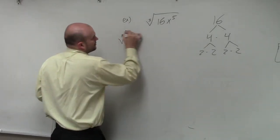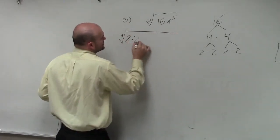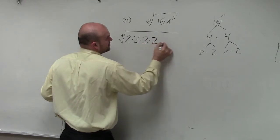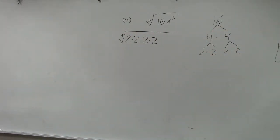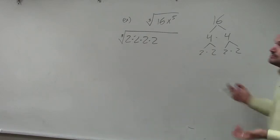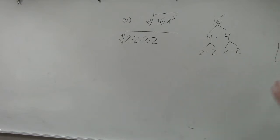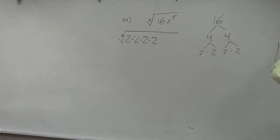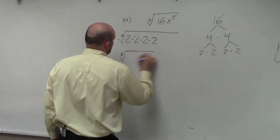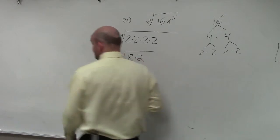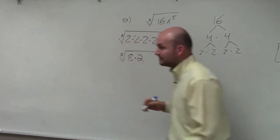Cube root of 2 times 2 times 2 times 2. Mr. McGlogan suggests rewriting it as 8 times 2 when you recognize it. That is absolutely correct — that's exactly what I would do. I'm just showing students how it works from here. Since you know 8 is a cube number, you can just rewrite it as 8 times 2, and that is actually my preferred method.